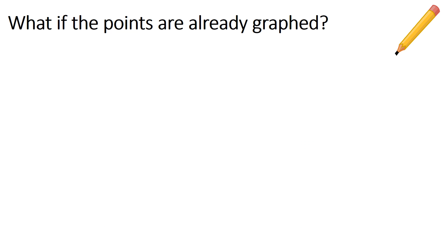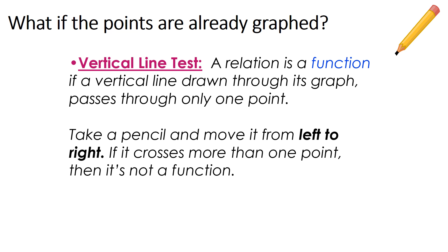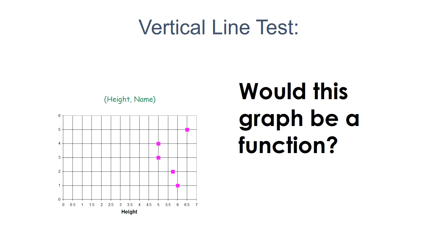What if the points are already graphed and not given in a table or diagram? That's when we use the vertical line test. A relation is a function if a vertical line drawn through its graph passes through only one point. To use the test, take a pencil and move it from left to right — if it crosses more than one point, it is not a function. Make sure you jot these two bullet points down.